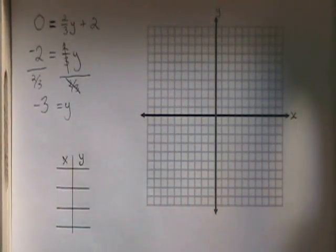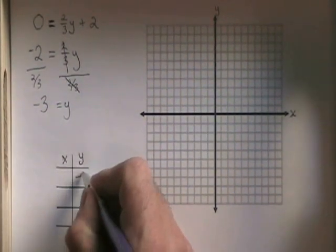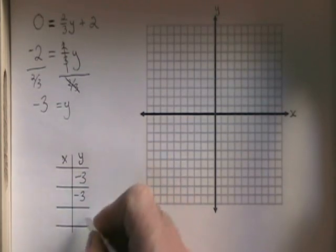Now that I have this statement, y equals number, y equals negative 3, I can fill in my table all at once. I put negative 3 all the way down the y side of the table.